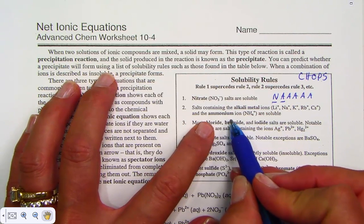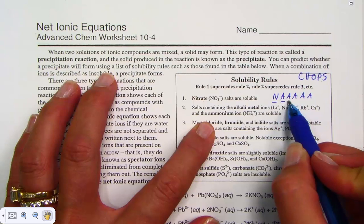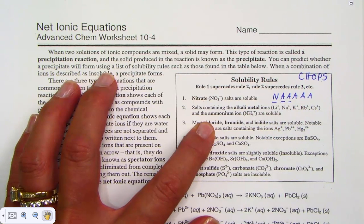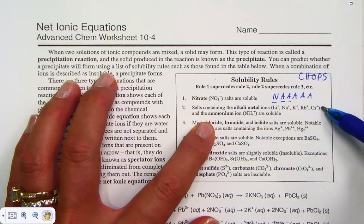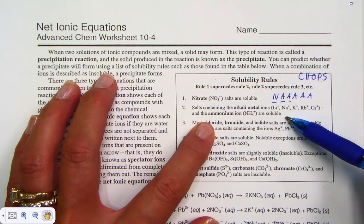Along with the ammonium ion, another one of the A's in the CHOPS NA saying: alkali metals and ammonium are always soluble.